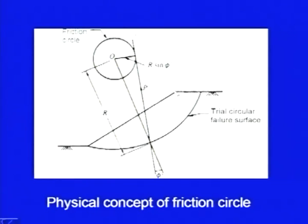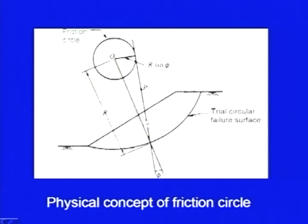Here is a slope with c-φ soil, and as usual we have taken a trial circle. This is the arc of the circle and this is the center. And if we draw a circle here — if we take the radius r·sin(φ') — we had drawn a circle which we called the friction circle. If you take a point here and plot a line inclined at an angle of φ', then this line, which is at angle φ' with the radial vector, should touch this circle tangentially.